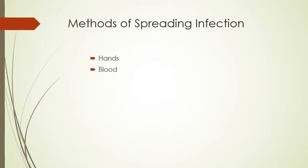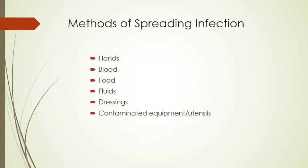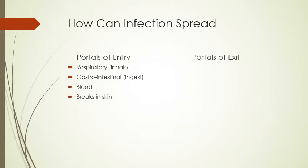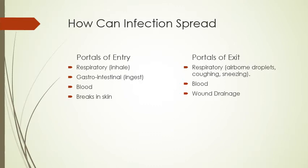Infection is spread through hands, blood, food, fluids, wound dressings, contaminated equipment or utensils — which is why it's important to clean and disinfect equipment and not reuse it — and through insects and animals. Infection can enter the body through the respiratory tract by inhaling, through ingestion by eating, or through blood or breaks in the skin. Infection can exit the body through the respiratory tract by coughing, sneezing, or airborne droplets, or through the blood.